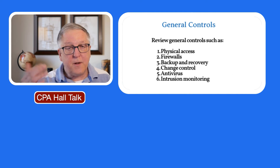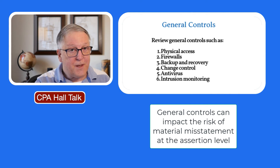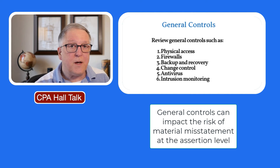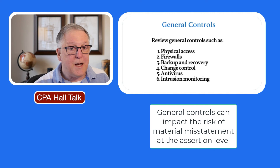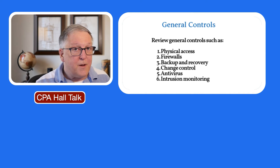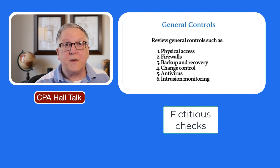You may be wondering how all of this affects the risk of material misstatement at the assertion level. These things can feel very broad and almost disconnected from whether misstatements occur, but they can have a direct impact. For example, if anybody can go into the IT room and they know what they're doing, they can change the software in such a way that they could process fictitious checks in the accounts payable module.